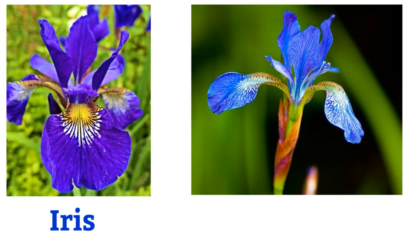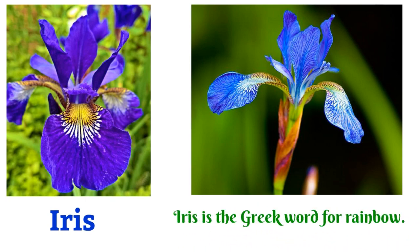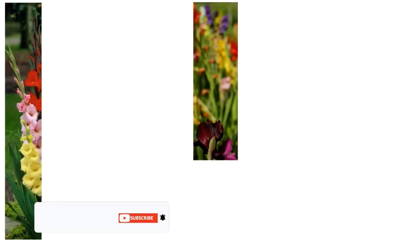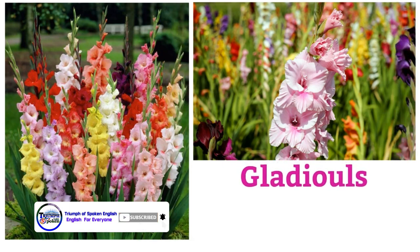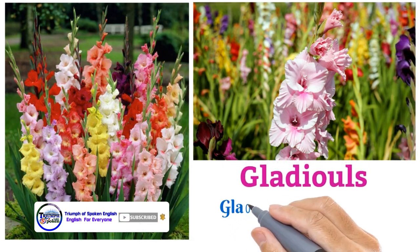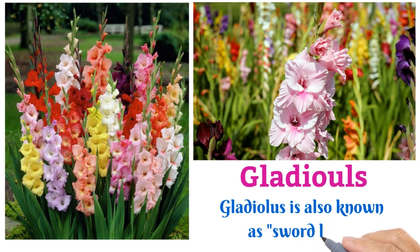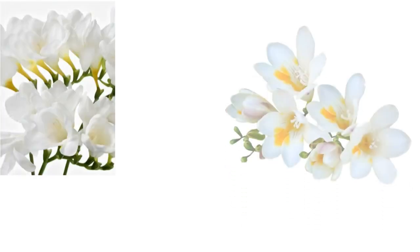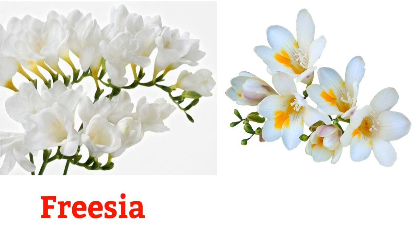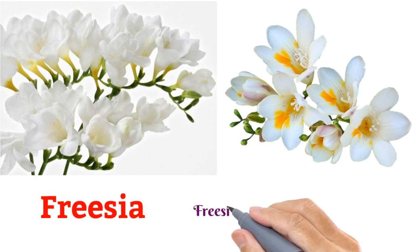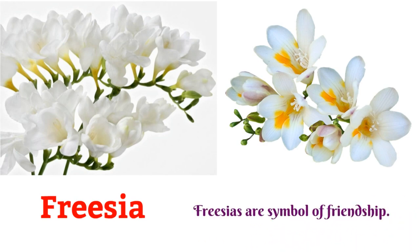Iris: iris is the Greek word for rainbow. Gladiolus: gladiolus is also known as sword lily. Freesia: freesias are a symbol of friendship.